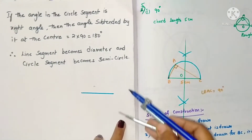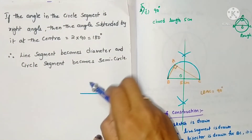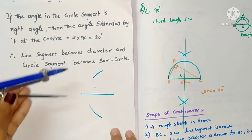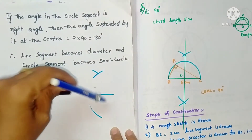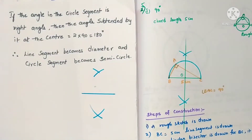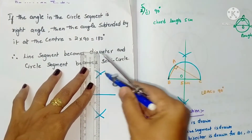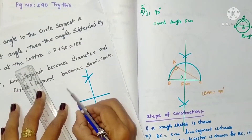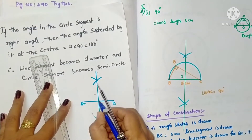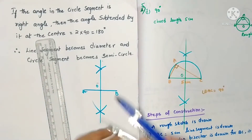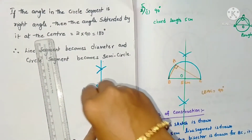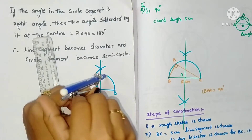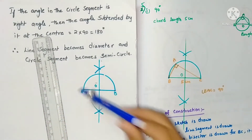To draw the figure: first draw a line segment, then draw the perpendicular bisector by taking more than half the radius. With the same radius, from the other side also draw the arcs. Join the two points of intersection — this is AB. Take the point of intersection as O. Now by taking O as center, with OA or OB as radius (both are the same), draw an arc.